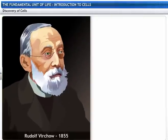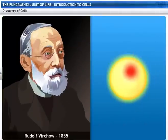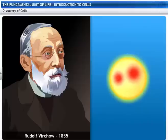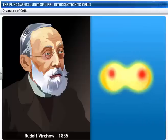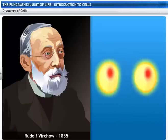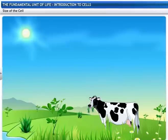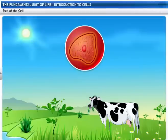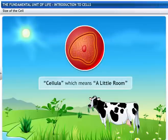Rudolf Virchow, in 1855, further expanded the cell theory by saying, "Omnis cellula e cellula," which means all cells arise from pre-existing cells. All living organisms are made of cells. Cell is derived from the Latin word cellula, which means a little room.